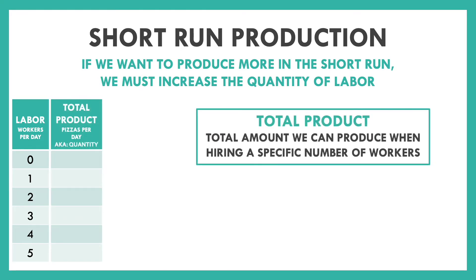We need to understand how the total amount of pizzas changes with the number of workers we hire. Our next column is something called total product — pizzas per day, also just known as the quantity. Total product is the total amount we can produce when hiring a specific number of workers. How many pizzas can we make if we hire zero workers? Zero pizzas. I will always provide the remaining values: one worker makes 4 pizzas, two workers make 10, three workers make 13, then 15, then 16.